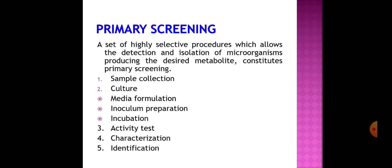Screening is performed in two stages. Stage one is primary screening, which includes a set of highly selective procedures allowing detection and isolation of microorganisms producing the desired metabolite. Primary screening includes: sample collection; culture, which involves media formulation, inoculum preparation, and incubation; and activity testing, where biochemical activities of microorganisms are performed, characterized, and identified.